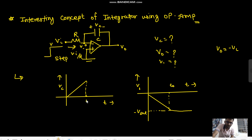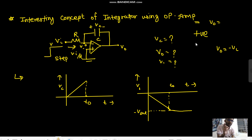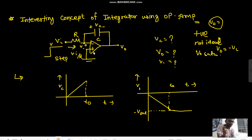At t-naught, what happens to the capacitor voltage after this point? As soon as the output saturates, we cannot apply the virtual ground concept. Virtual ground cannot be applied when there is positive feedback, when the op-amp is not ideal, or when the output saturates. So now V-out has saturated and we can't apply virtual short here.